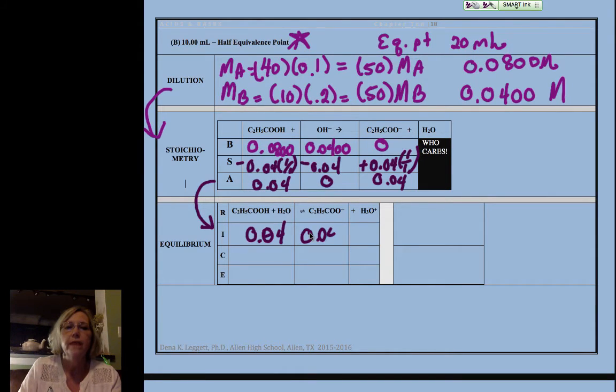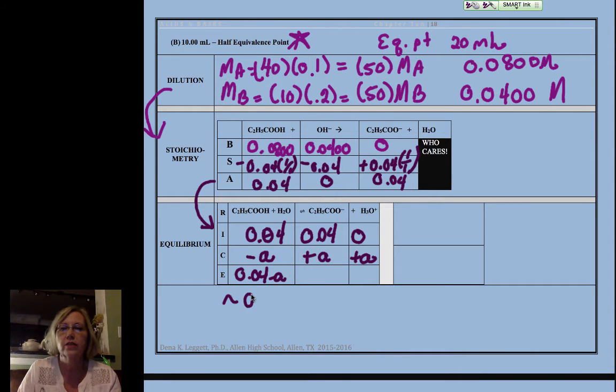Now I don't know how much I'm going to lose, I'm going to call it a. I like to put it a for acids. So this is going to be 0.04 minus a, but we're going to say that's approximately equal to 0.04 because a is going to be so small. This is 0.04 plus a, but we're going to again neglect that a and say it's approximately 0.04, and then this is a.